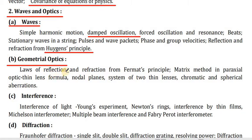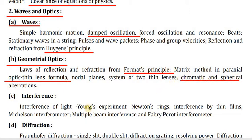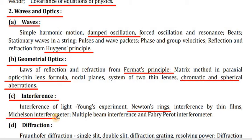Section B — Geometrical Optics: laws of reflection and refraction from Fermat's principle, matrix method in paraxial optics, thin lens formula, nodal planes, system of two thin lenses, chromatic and spherical aberrations. Section C — Interference of light: Young's experiment, Newton's rings, interference by thin films, Michelson's interferometer, multi-beam interference, and Fabry-Perot interferometer.